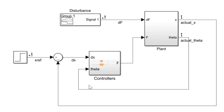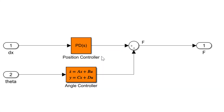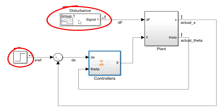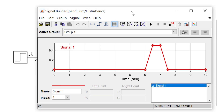In the Simulink model, we have a controller that adjusts the cart's position to keep the pendulum upright. We give the cart an initial push and have an external force applied to the pendulum for one second, six seconds into the simulation.